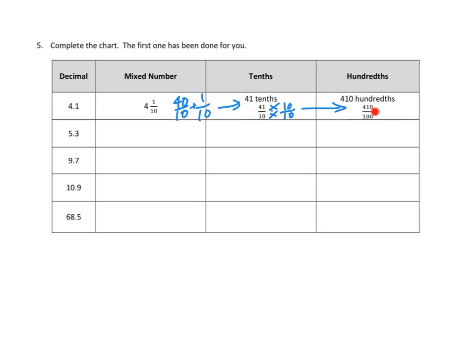In other words, four hundred and ten hundredths. So, we can do that with fractional form, just like this, and we should be able to do that with each of these decimal numbers, with 5.3, 9.7, 10.9, and 68.5. In each step, we're just taking our mixed number, we'll first create our mixed number, and then go ahead and create like units in tenths, and then like units in hundredths, as a way of figuring out how we can fill out this chart.